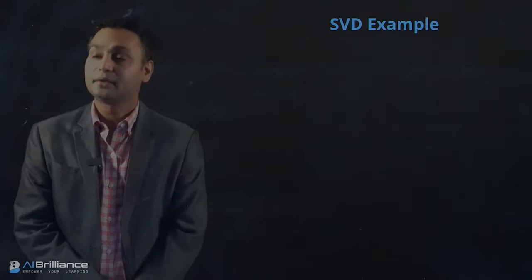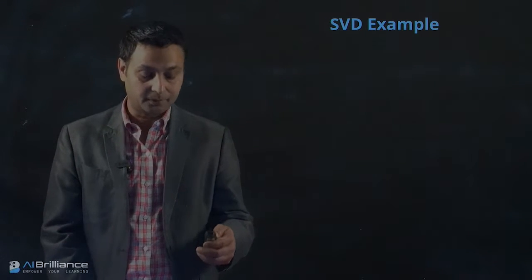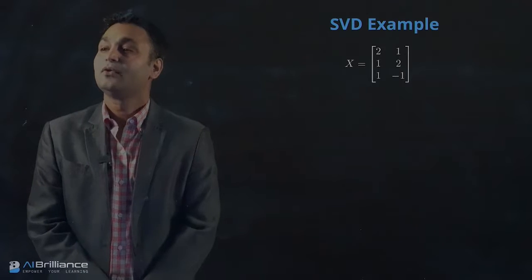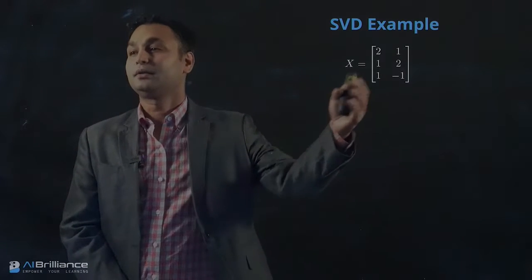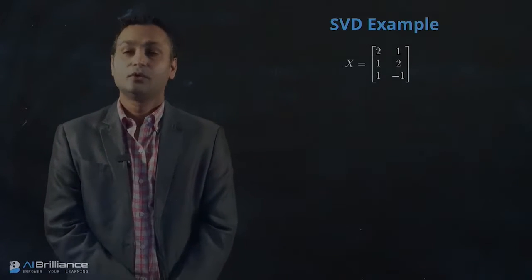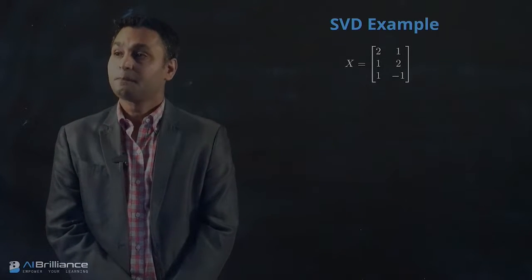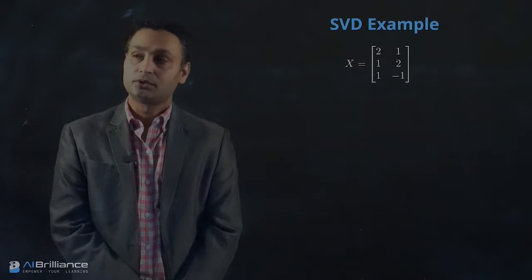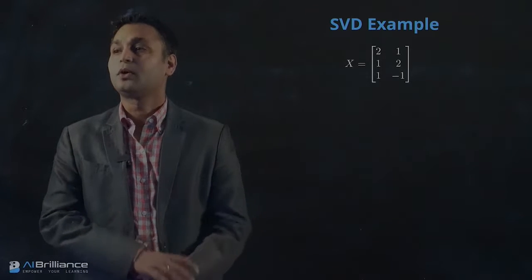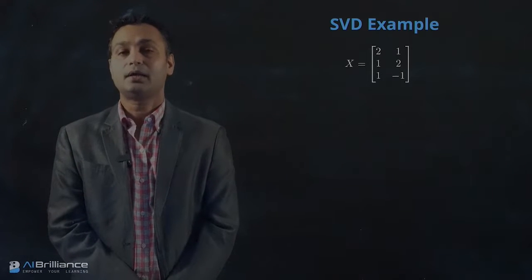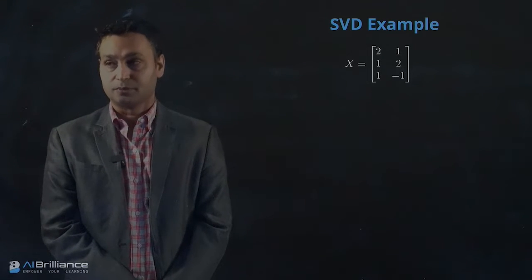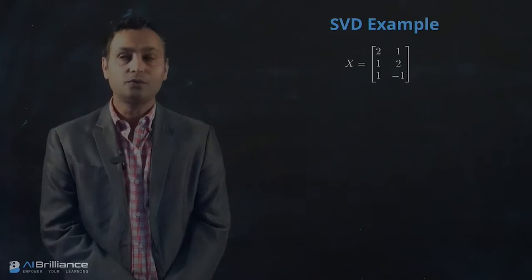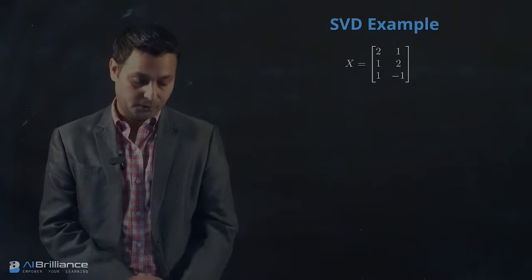Let's take the SVD example problem. We have a matrix X which has three rows and two columns, and we want to write an SVD factorization of this matrix. How do we go about doing that?